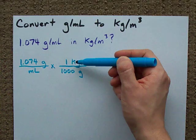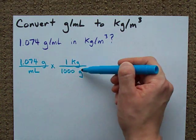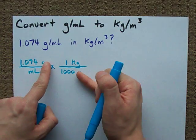The reason I put kilograms on top is because I want grams to be on top here and on bottom here. That way they cancel each other out.